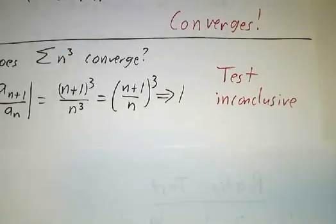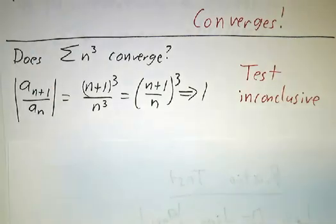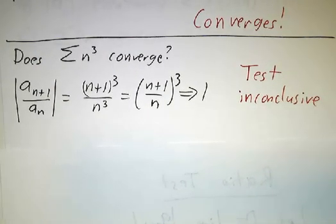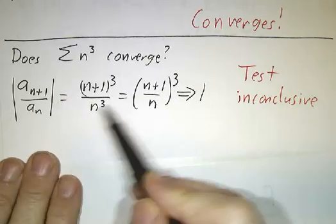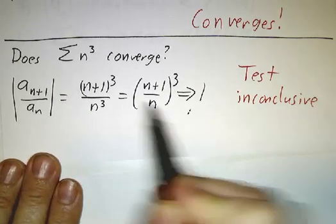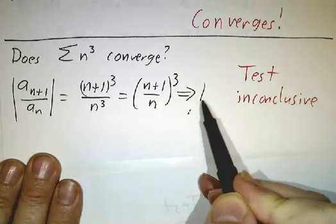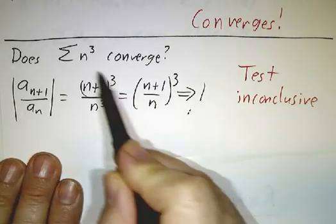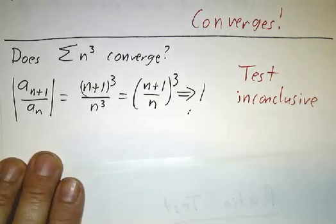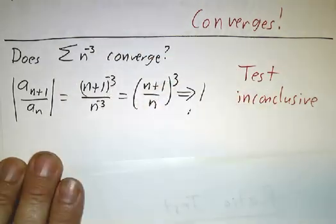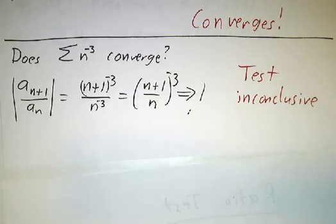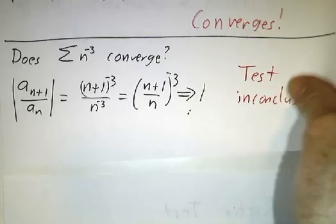Last example: the sum of n cubed. This obviously diverges — the terms get bigger and bigger — but you can't tell from the ratio test. If you do the ratio test, you get a limit of 1, because (n+1)^3 over n^3 is ((n+1)/n)^3, and that goes to 1. So even though this is obviously divergent, the test can't figure it out. Similarly, the sum of n to the minus third converges, but again the test can't tell. If the test gives you a ratio of 1, it just doesn't tell you which way it goes.